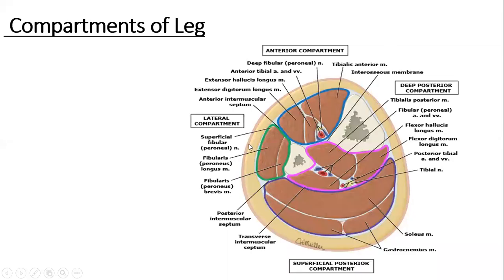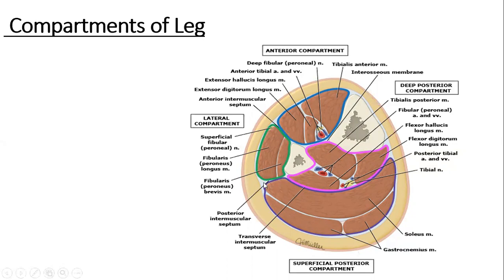Today we shall be covering the compartments of the leg, starting with the anterior compartment and completing its contents. The compartments of the leg are formed with the help of intermuscular septa that arise from the undersurface of the deep fascia of the leg, called the crural fascia. Two septa arise from its deep surface: the anterior intermuscular septum and the posterior intermuscular septum.